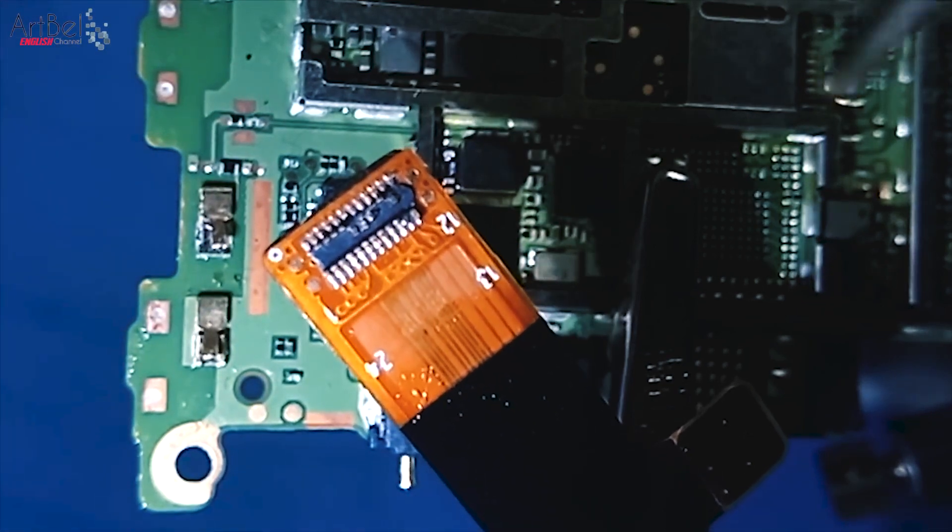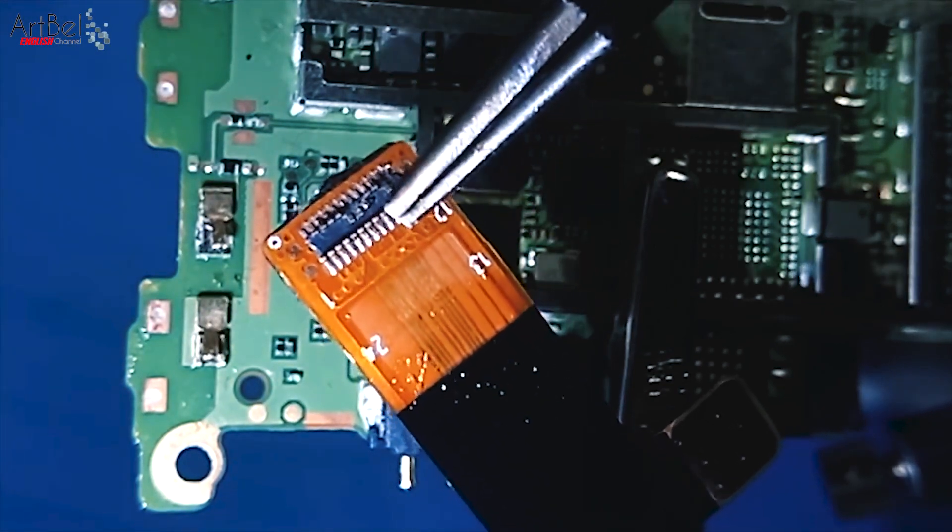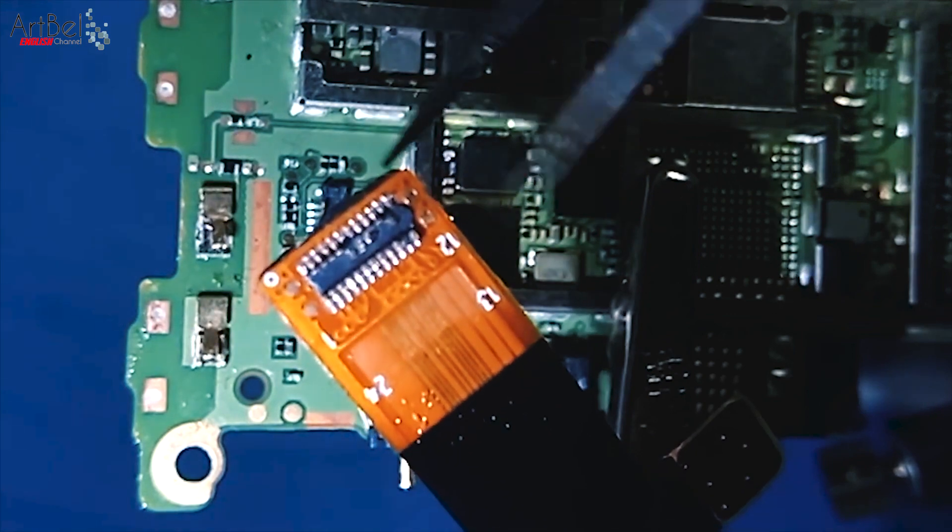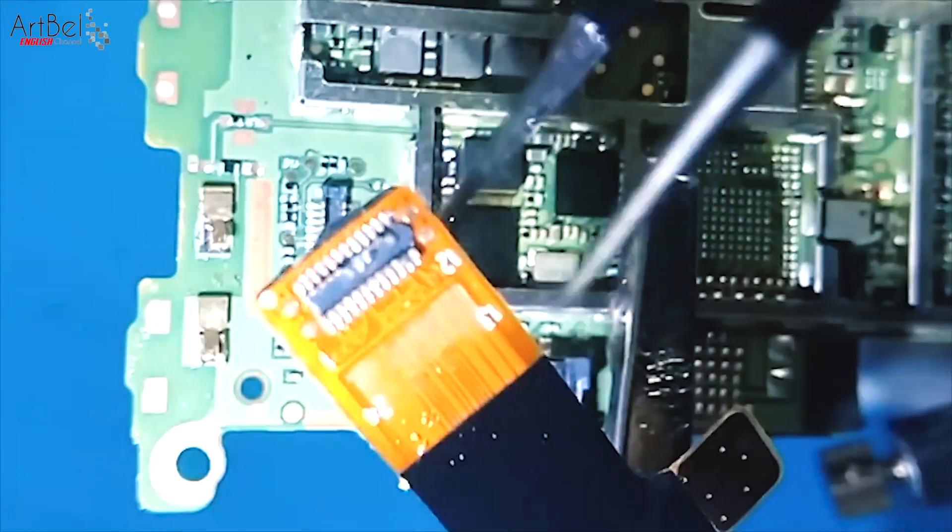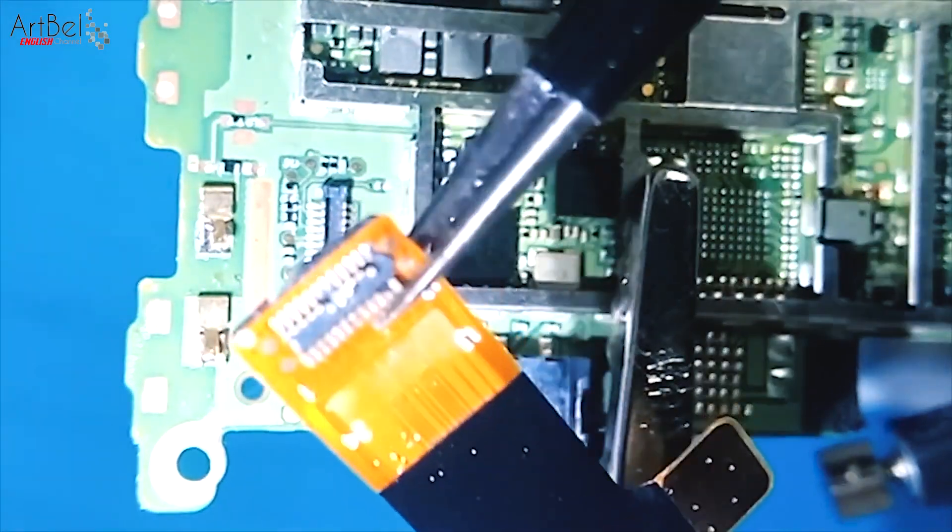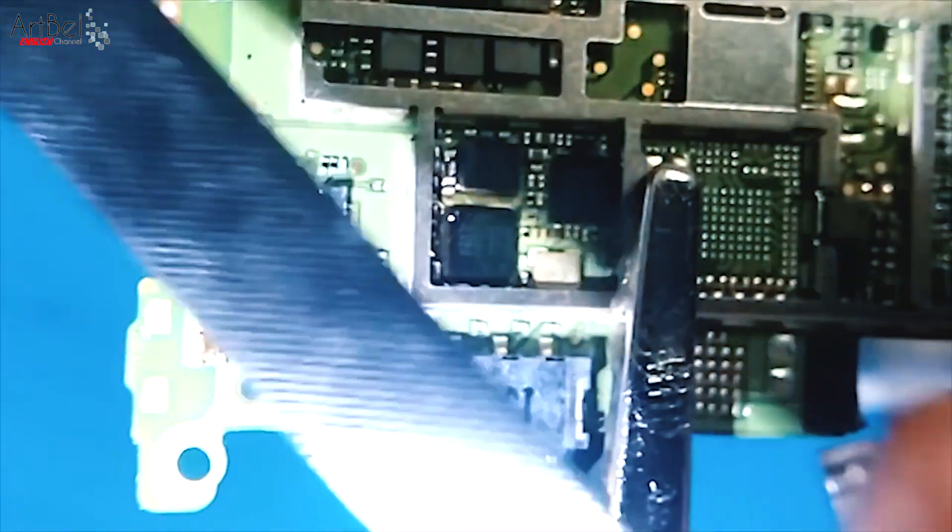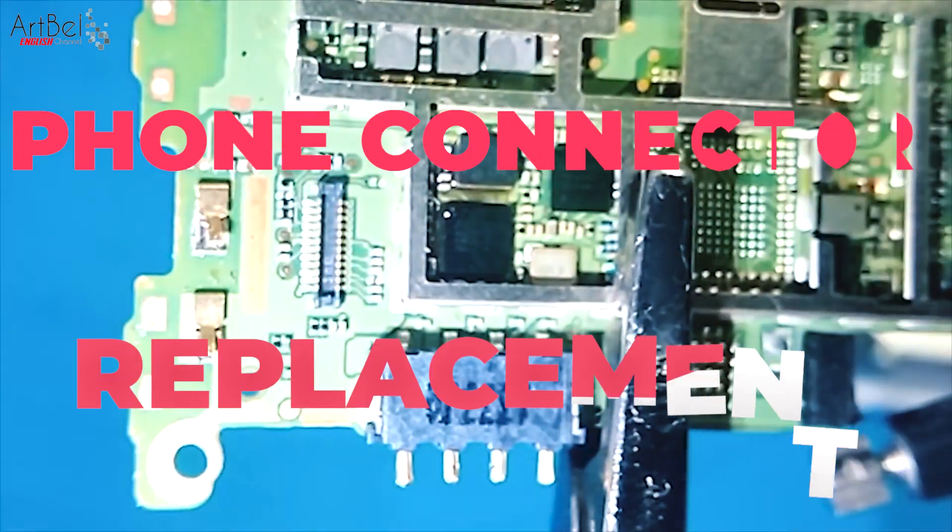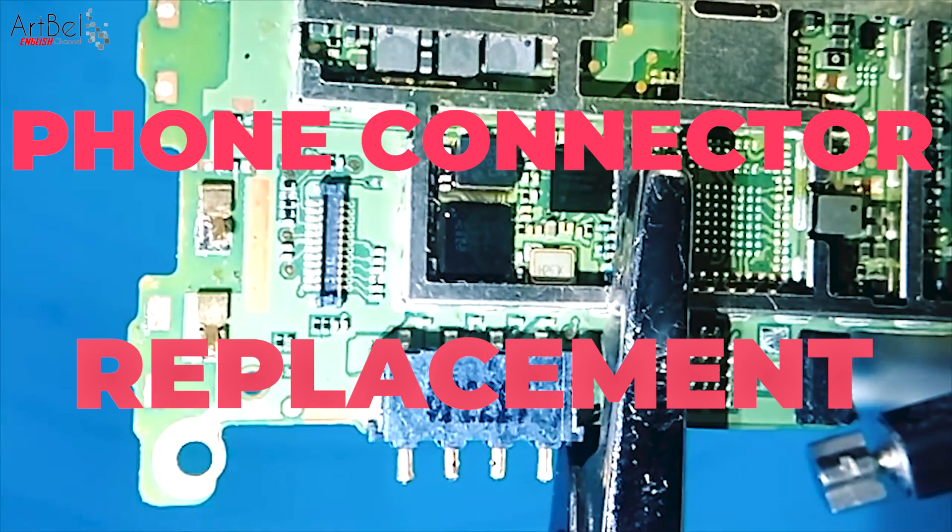In the video I'll change the broken connector on the mobile cable. It broke after installing it incorrectly. The cost of the cable is about 8 dollars. I don't want to buy it, so I'll rearrange the connector from an old board.